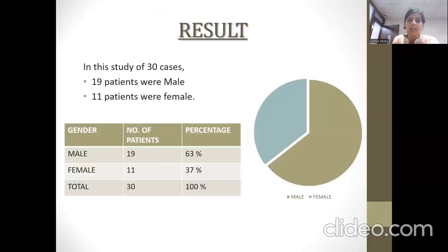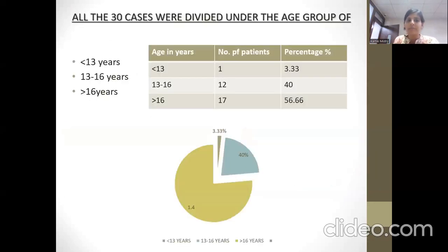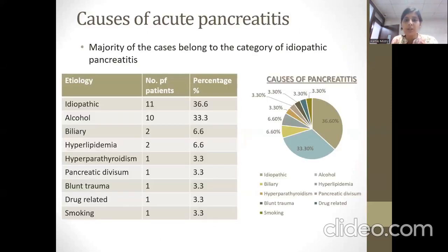Results: 30 cases were included in the study, of which 19 patients were male and 11 patients were female. Based on age group, there was one patient less than 13 years of age, 12 patients aged 13 to 16 years, and 17 patients more than 16 years of age. Based on causes, the maximum number of patients had an idiopathic cause, followed by alcohol, biliary causes, and hyperlipidemia.